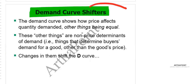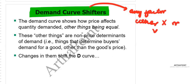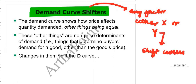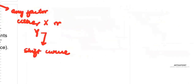Here is a general rule: any factor that does not appear on either the x-axis or the y-axis will always lead to a shift of the curve. This applies whichever curve you talk about — micro or macro — if that factor is not on the x or y-axis, it will lead to a shift of the curve.